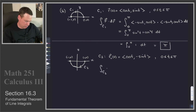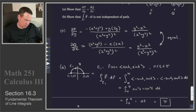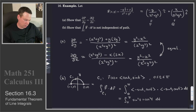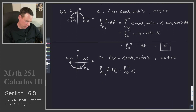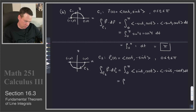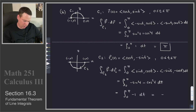The integral along C2 of F·dr₂ is the integral from 0 to π. F is (-y/(x²+y²), x/(x²+y²)), but x²+y² = 1, so this becomes (sin t, cos t) dotted with r₂'(t) = (-sin t, -cos t) dt. That gives the integral from 0 to π of -sin²t - cos²t dt = the integral of -1 dt, which has a value of -π.